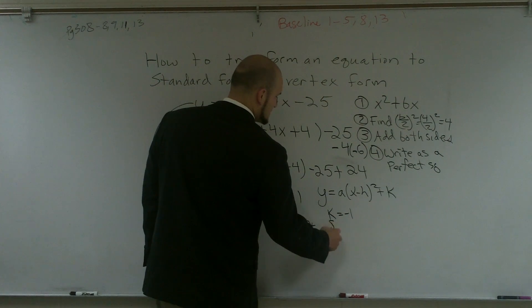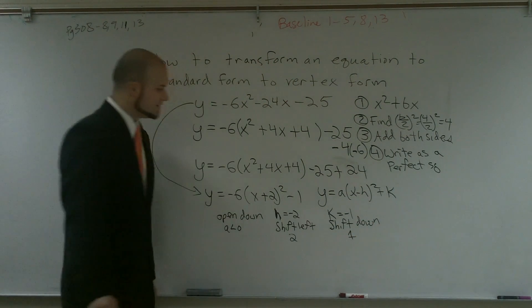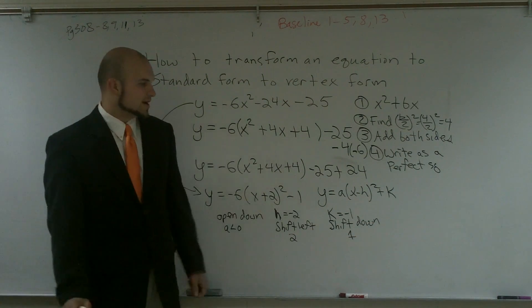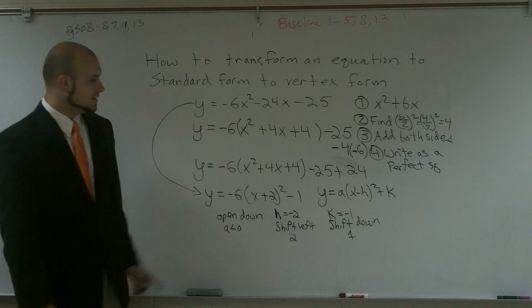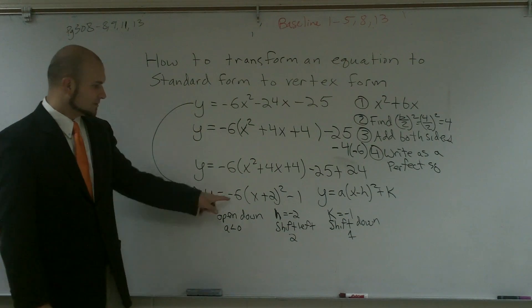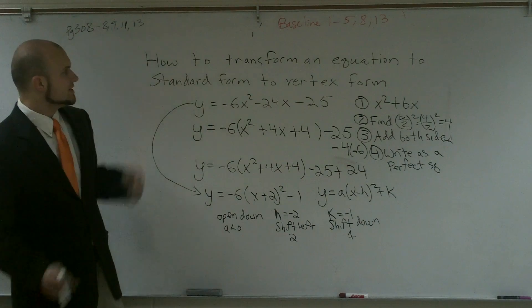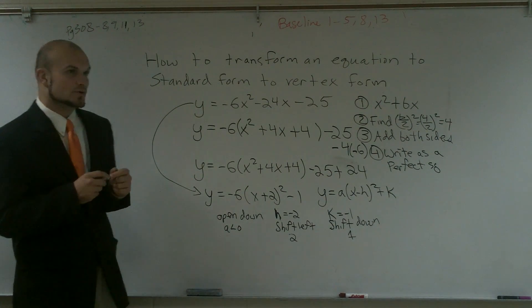These are all from your parent graph at the point 0, 0. But you could say that your vertex is at negative 2, negative 1. It's going to open down. It's also going to have a compression at negative 6. And we'll work on a little bit more graphing here in a second. But that's how you transform an equation from standard form to vertex form.